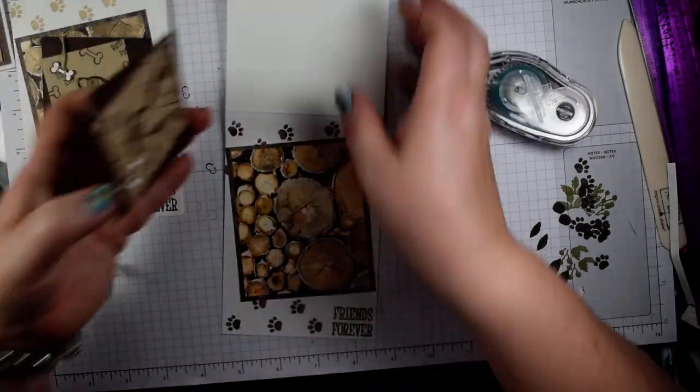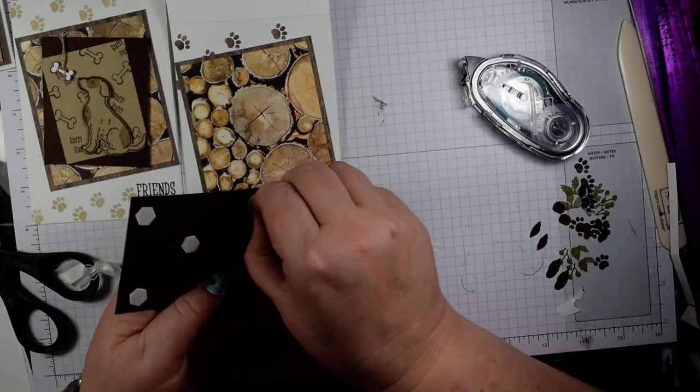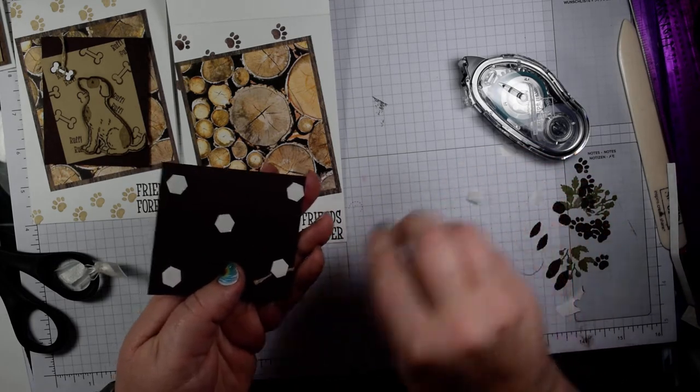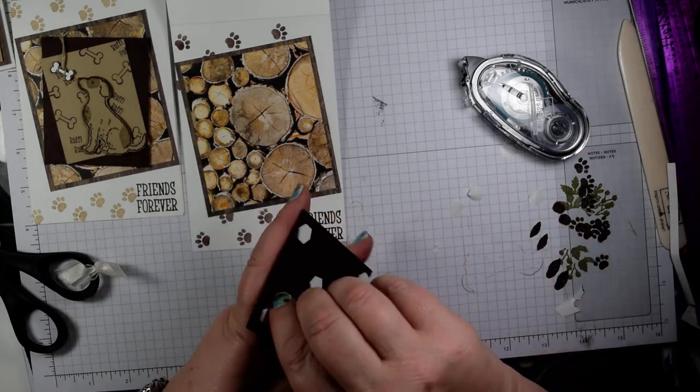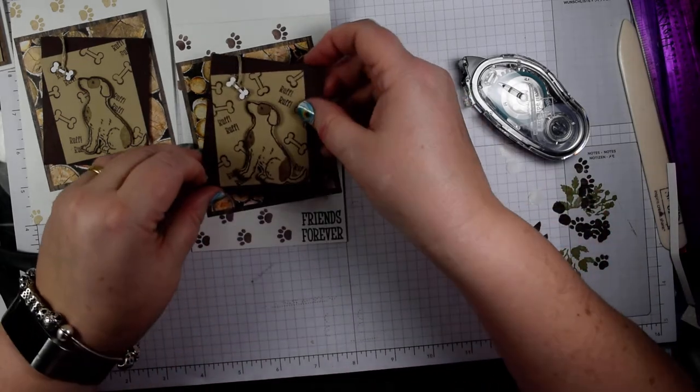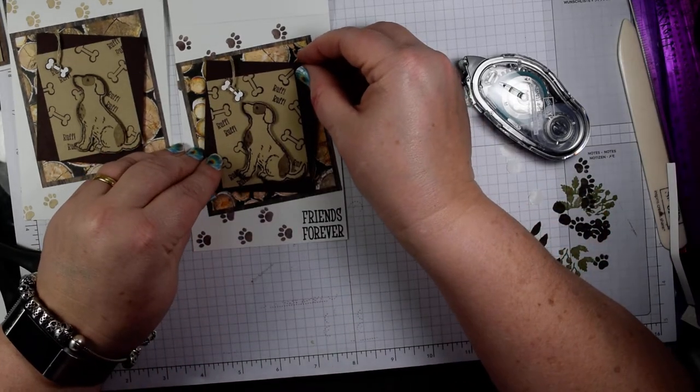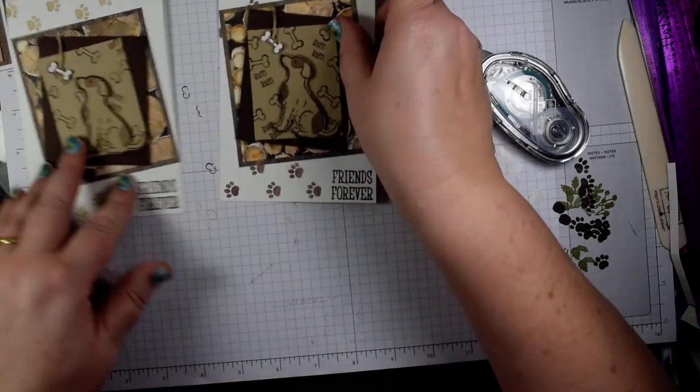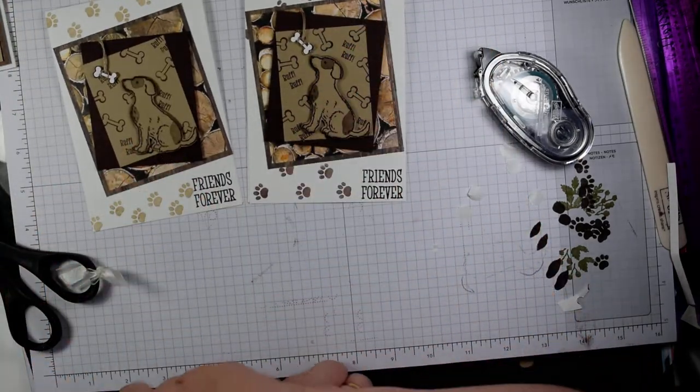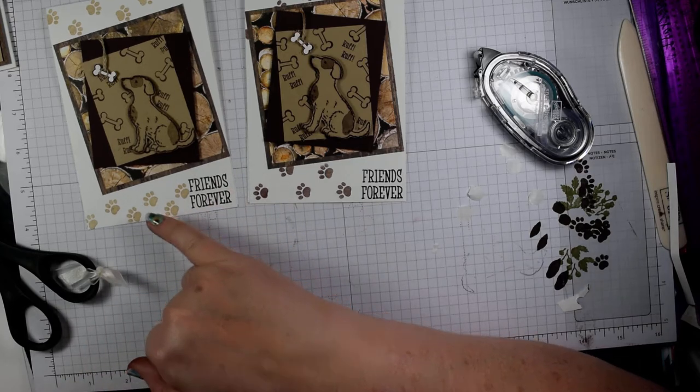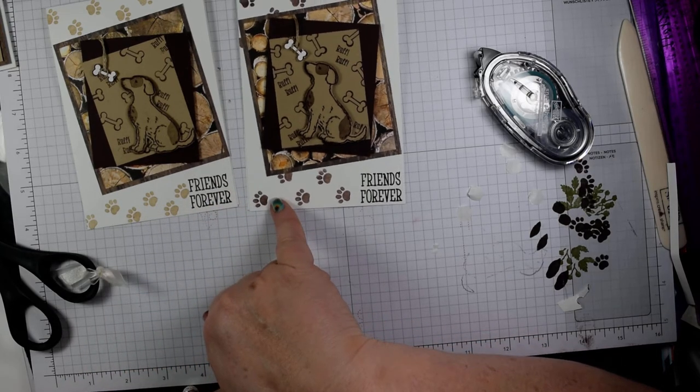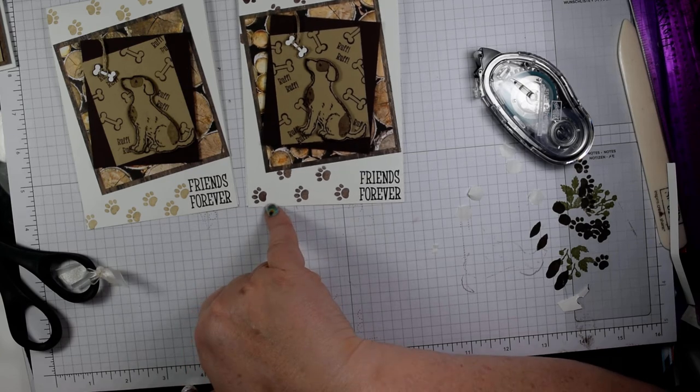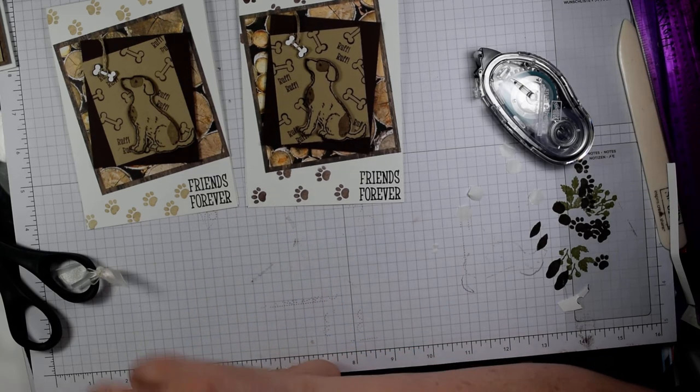I'm then going to put my layer onto the front, and that's going to go at a slight angle as well. And there we have a pair of super cards for some dog lovers. I've used Crumb Cake here. In this instance I've just used some stamped-off Early Espresso. So if you only have one colored brown ink, you can just use the one. So there's our project.